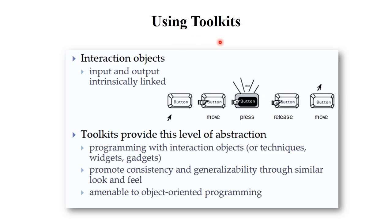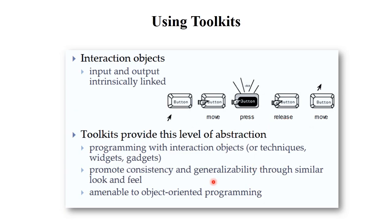The next small topic is using toolkits. Toolkits are used for interacting with objects — input and output are clearly linked. For example, there are different types of buttons: you can press, move, or release. Toolkits provide a level of abstraction, meaning the user uses all those things but how they are developed and the working behind them is hidden from the user. Programming with interaction objects includes different types of widgets and gadgets, which promotes consistency and generalizability through a similar look and feel.